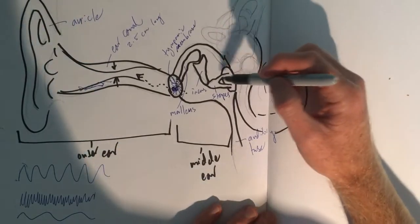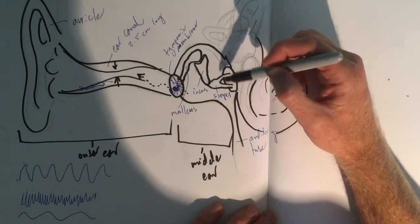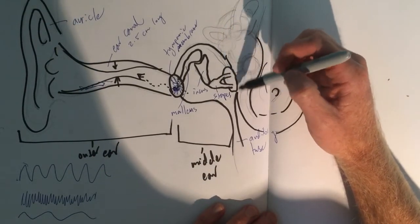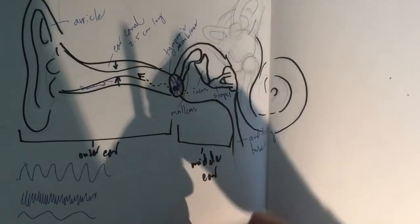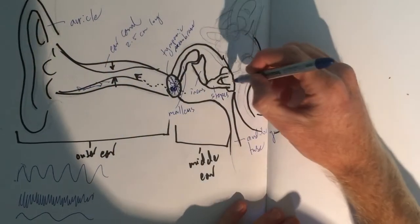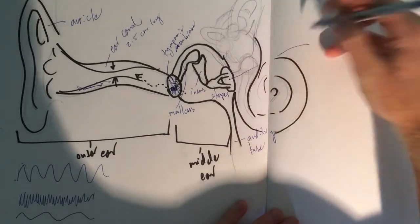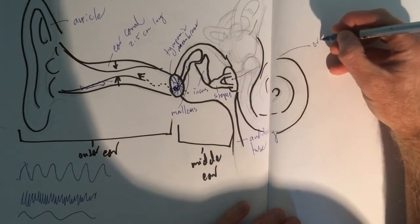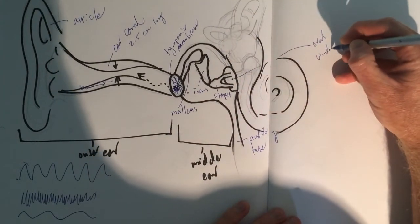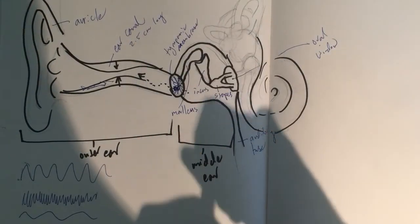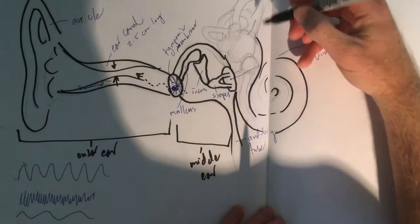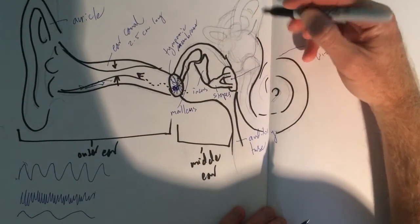So on the other side of the stapes, the stapes makes this little oval-like structure, and this oval-like structure connects to the inner ear. And that oval-like structure is called the oval window. Now, on the other side of that, let me draw it out real quick.